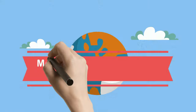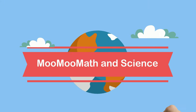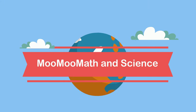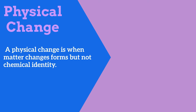Welcome to Moo Moo Math and Science, and Physical and Chemical Changes. A physical change occurs when matter changes forms but not its chemical identity. Examples include changes in size, shape, and phase changes.